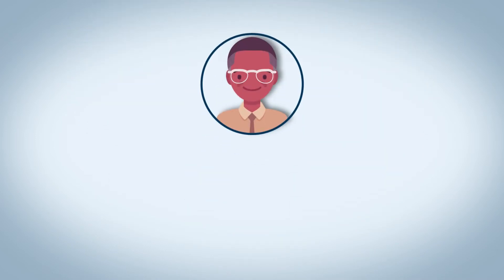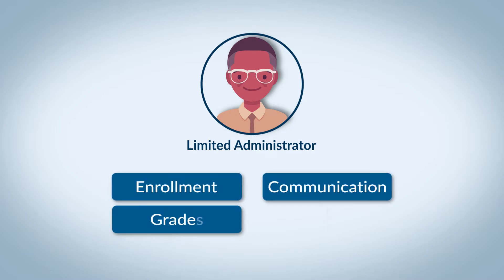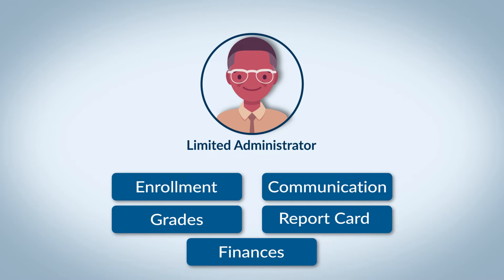A step below the full administrator is the limited administrator. These accounts only have access to areas in the system that a full administrator has explicitly given them permission to access. For example, we might set up a registrar account that can access tools like communication, online enrollment and registration, and finances, but that wouldn't be able to access grades, report cards, or other features like that. Whereas full administrators are a preset group that has access to everything by default, limited administrators are customized on a user-by-user basis, meaning you can customize each account to have access to whatever they need.